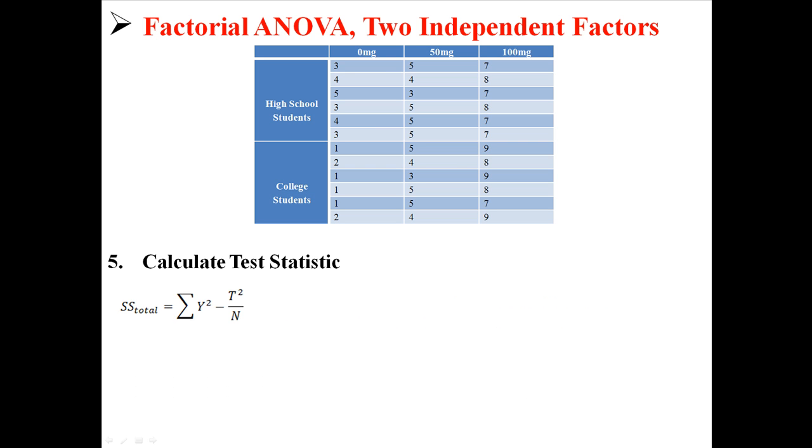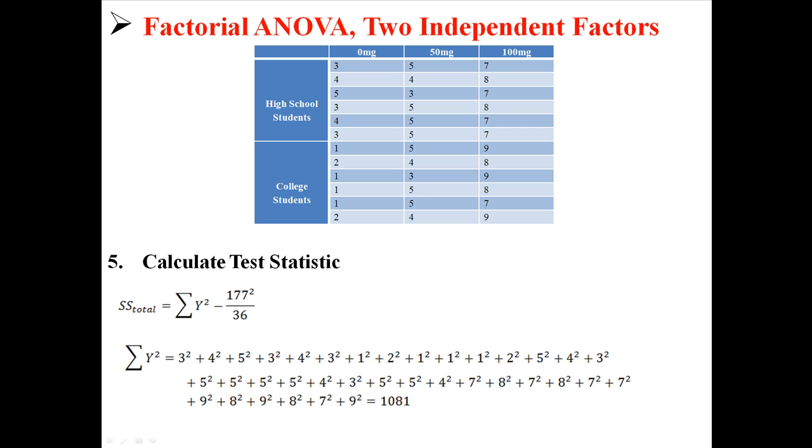So now I'm going to skip error and I'm going to do total because total is pretty easy. Again we already know t squared over n, so we just need to find the sum of all y squared. Now the sum of all y squared means we're going to take every value, square each one of those values, and then add them together. So down here I square every single individual value, and I find a sum of y squared of 1081. So I put that in the equation and we find sum of squares total of 210.75.